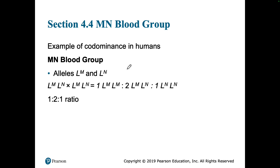The way you would set up the Punnett square for co-dominance is very similar to incomplete dominance. If you cross two heterozygotes, you're going to get that one-to-two-to-one ratio, just like with incomplete dominance.